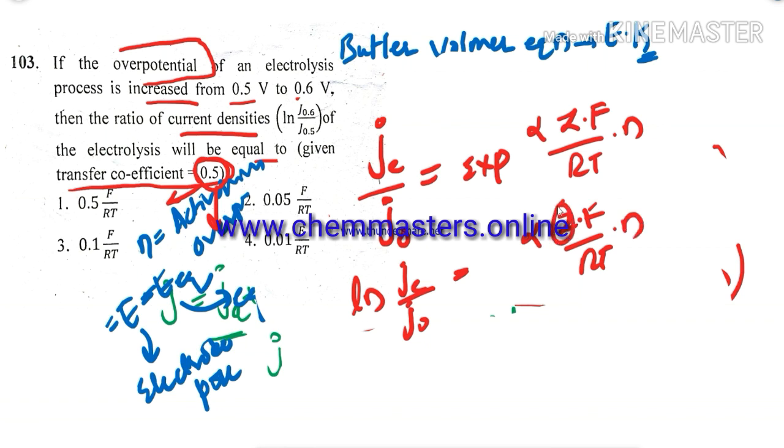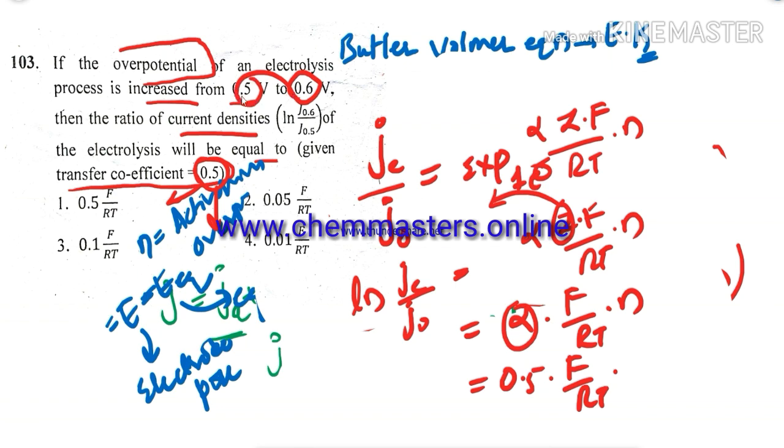Consider it is here in electrode cathodic or anodic reactions or electrolytic process, only one electron is involving. In that case we can take alpha into F by RT into eta. So here alpha is given as 0.5. Just take it 0.5 into F by RT into eta. So eta equals to 0.6 minus 0.5, that equals to 0.1. So from that we can get 0.05 F by RT.